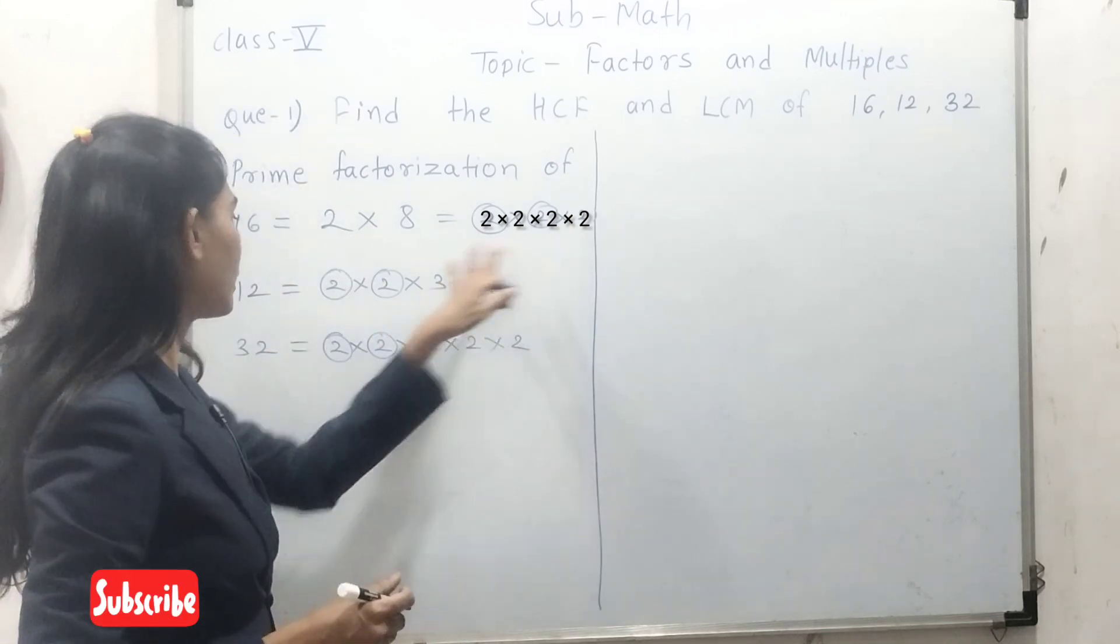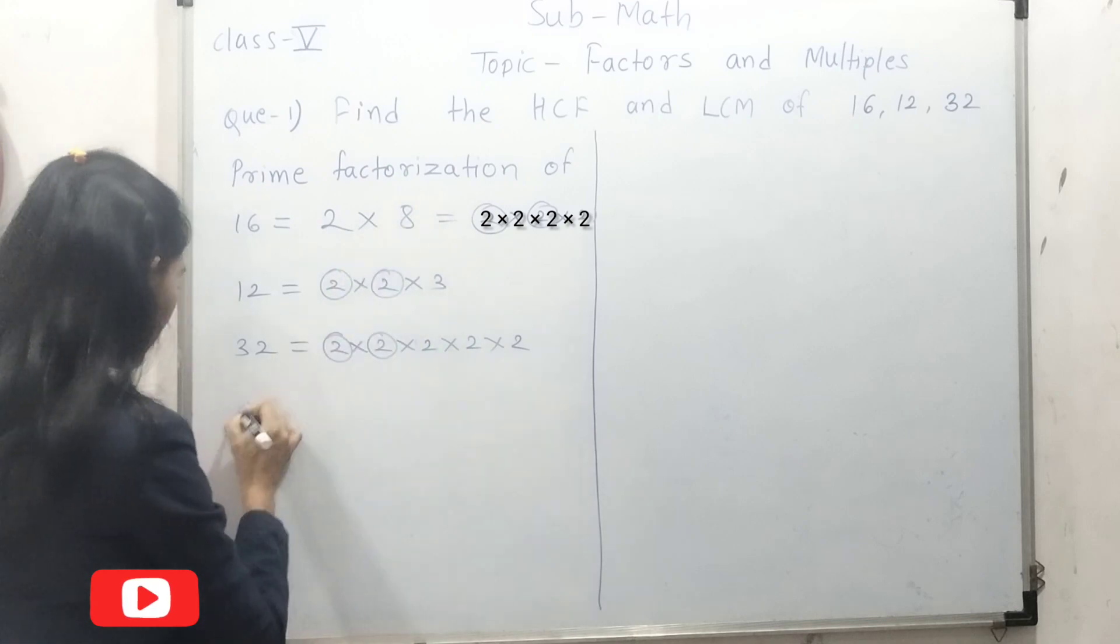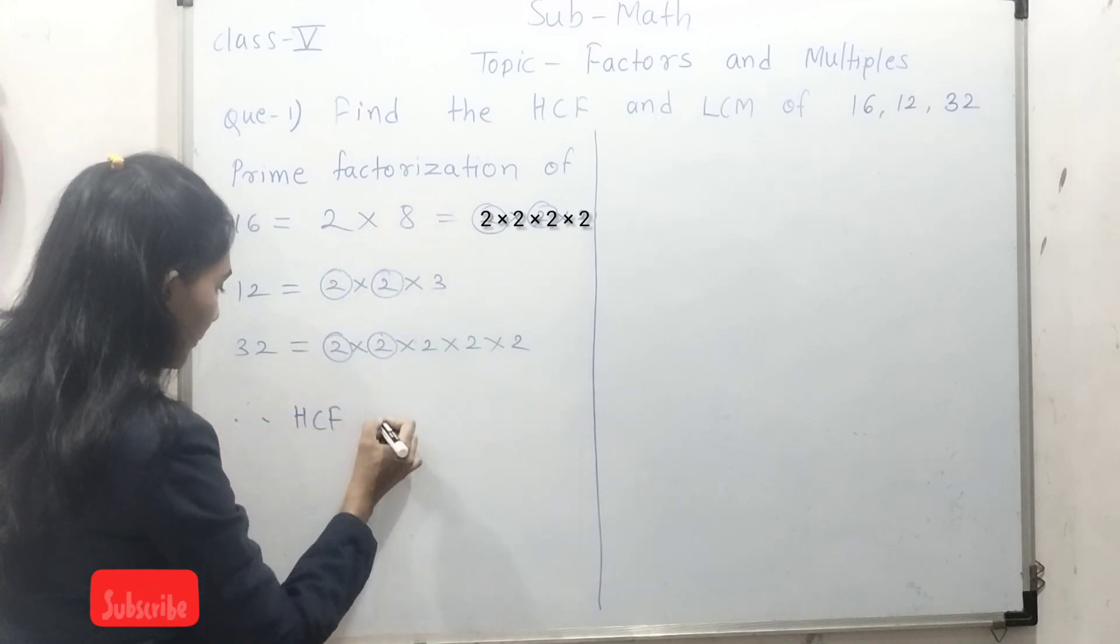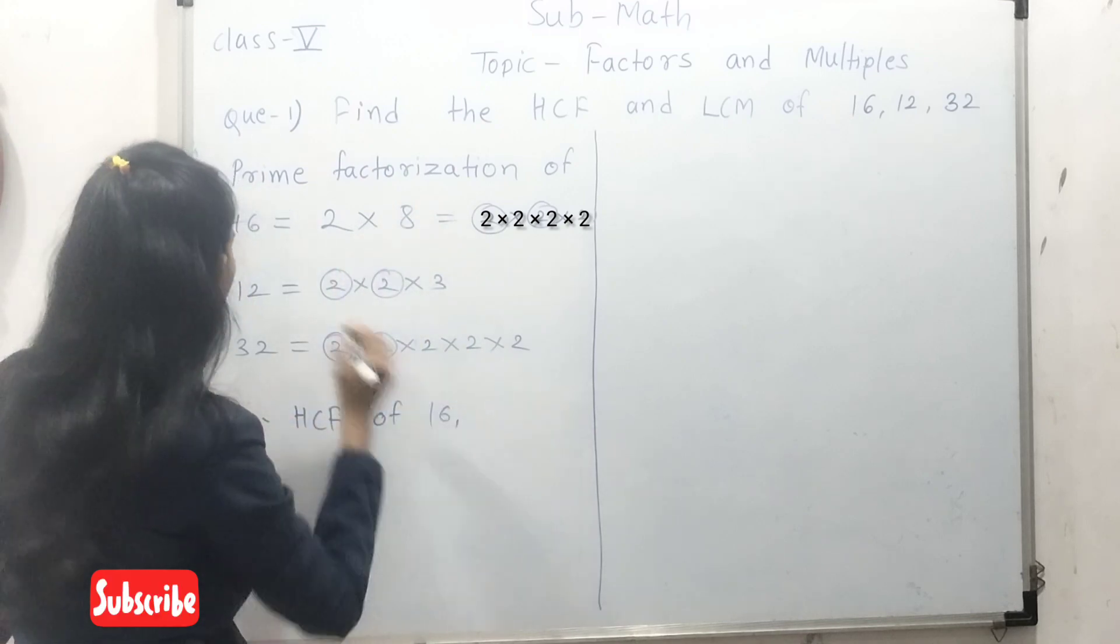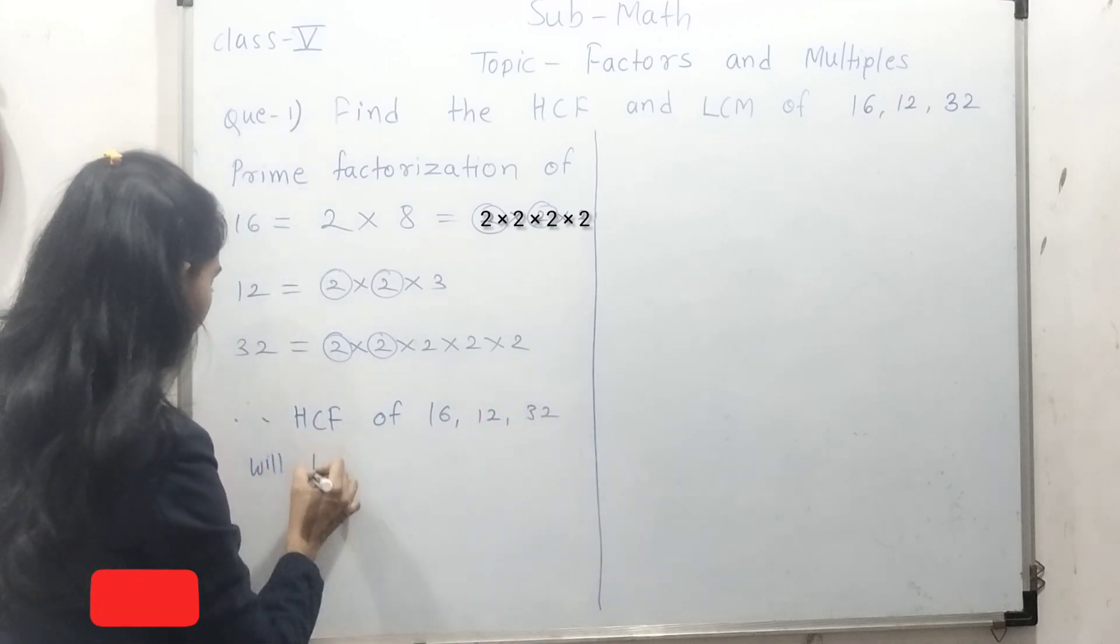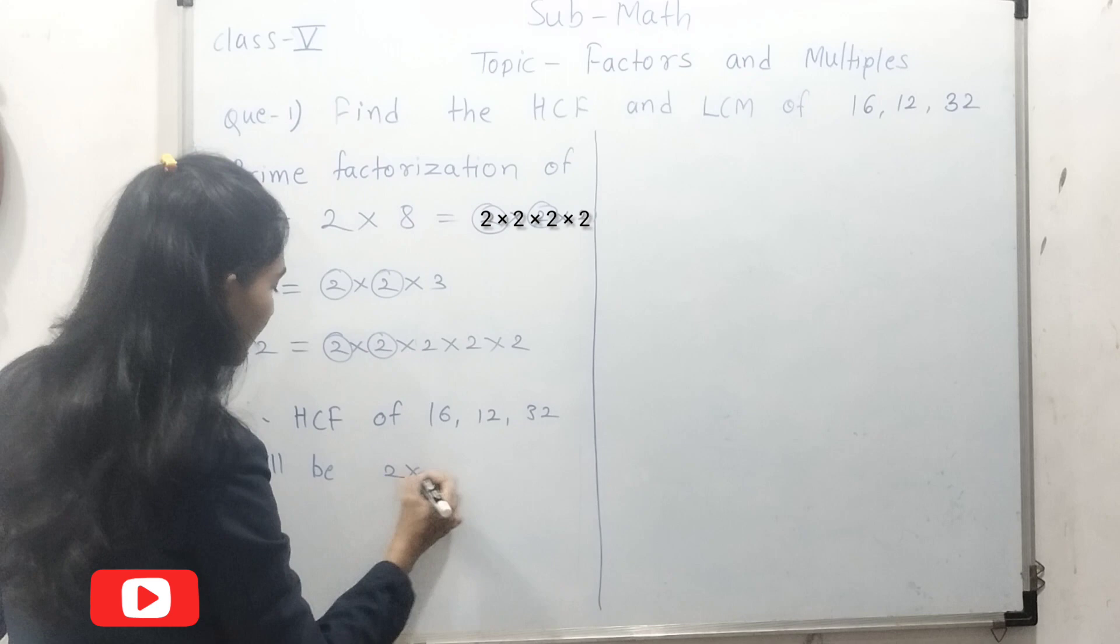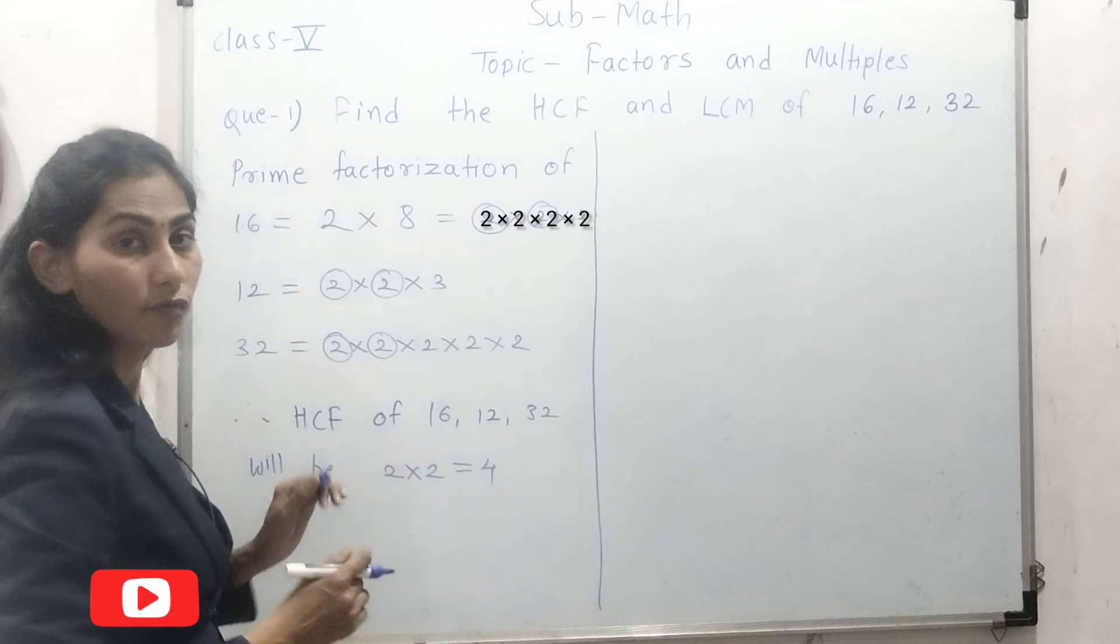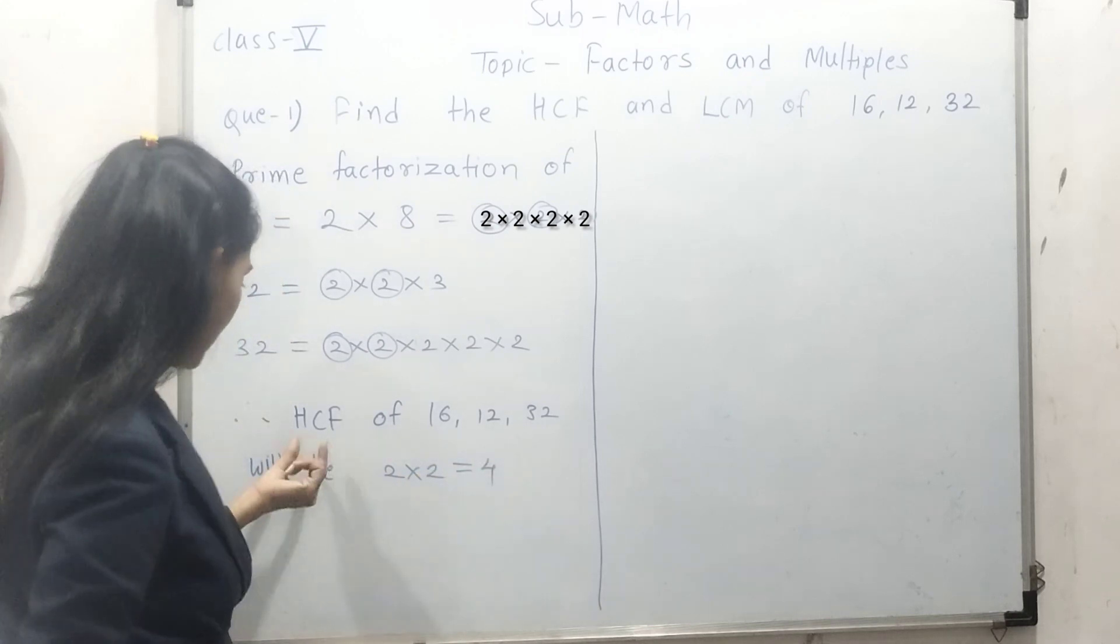We will take only 2 times 2. Therefore, HCF of 16, 12, and 32 will be here: 2 multiplied by 2 equal to 4. 4 is the highest common factor, HCF means.